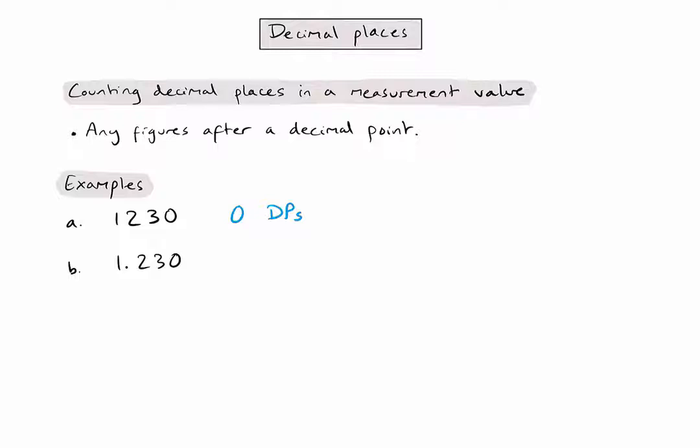In this second example, I can see that there are three numbers after the decimal point. Therefore, we say it has three decimal places.